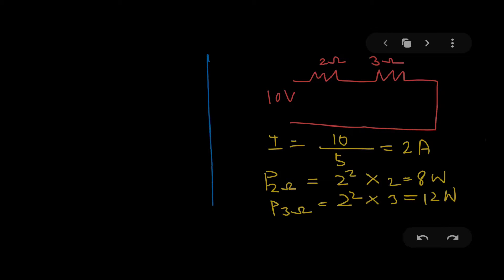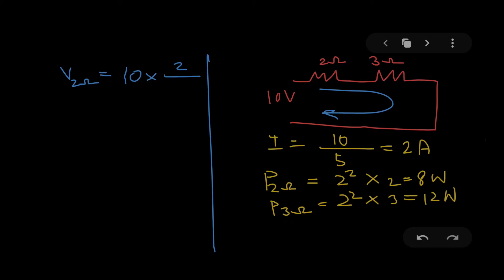Now if I want to use V²/R, I first have to calculate V across the 2Ω resistor, which is not the source voltage. In a series circuit the voltage across resistors is divided in proportion to their resistance values. Using the voltage division method: V across 2Ω = 10 × 2/(2+3) = 4 volts. And the voltage across 3Ω = 6 volts, since the voltage divides in proportion to 2 and 3.